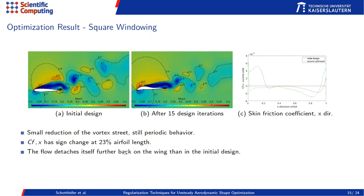Now let's look at the shape optimization results. For square windowing, here is the initial NACA airfoil baseline and here the design optimized after 15 iterations. The point of flow separation is further back on the airfoil compared to the initial design, visible in the skin friction coefficient plot of the suction side. Flow separation occurs at about 20–23 percent of airfoil length, so the flow detaches itself further back on the wing.